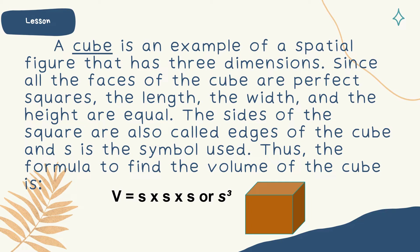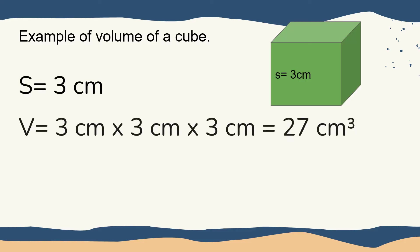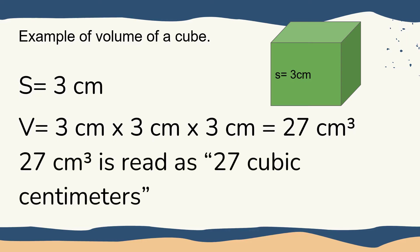So example yan natin ang cube — pare-pareho siya ng sukat. Ang characteristics niya is like the polygon of a square. So example natin ang volume of a cube with side na 3 cm. Meaning, a length, a width, and a height is also 3 cm, kaya no need isulat lahat ng 3 cm. So if we're going to substitute: 3 cm times 3 cm times 3 cm. 3 times 3 is 9, times 3 equals 27 cubic centimeters. So yung 27 cm cubed is read as 27 cubic centimeters — inuuna nating basahin yung exponent na 3 as cubic, then centimeters.